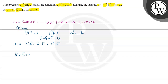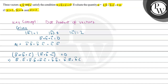We compute (a + b + c)·(a + b + c), which equals 0 since a + b + c = 0. Expanding this gives a·a + b·b + c·c + a·b + a·c + b·a + b·c + c·a + c·b = 0.